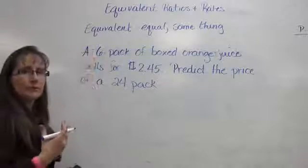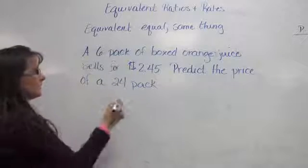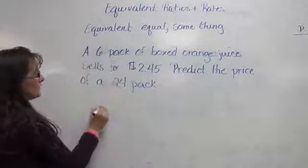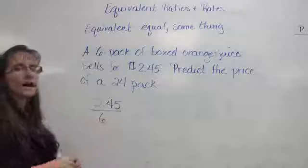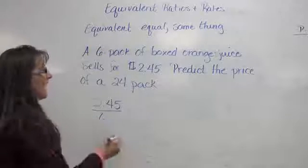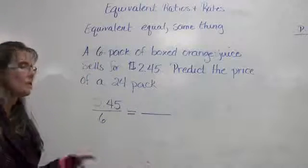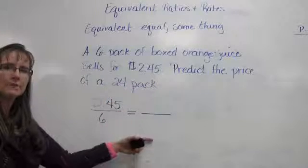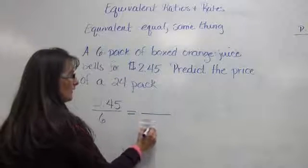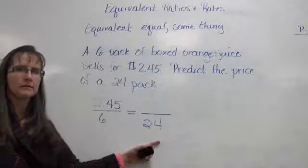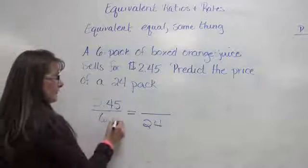Now remember, if I write this as a ratio or as a rate, I would put my money on top because it's price per unit. So we're going to put the $2.45 on top of the six-pack of boxed orange juice. How could I predict the cost of a 24-pack? Well, will the 24-pack go on top or will it go on bottom on my equivalent rate? It's going to go on the bottom. So here's where my 24 would be. How did I go from 6 to 24? I had to multiply by 4.